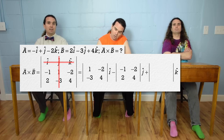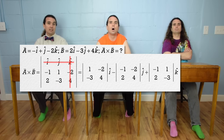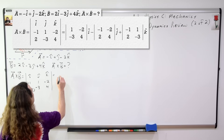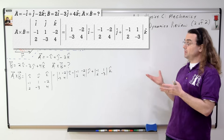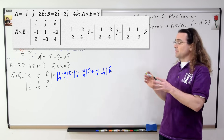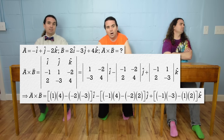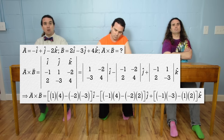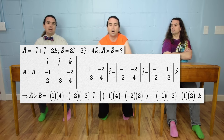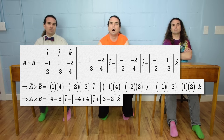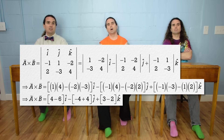Cross out the row and column which has k in it and add the determinant negative 1, 1, 2, negative 3 times unit vector k. Mr. P, can we skip this step? I don't normally write out the step with the 2 by 2 determinants, however I think it's a good idea this time to see where the next step comes from. Now we multiply 1 by 4 and subtract the product of negative 2 and negative 3, multiply that quantity by unit vector i. Then we subtract the quantity negative 1 times 4 minus the product of negative 2 and 2, all times unit vector j. And we add the product of negative 1 and negative 3 and subtract 1 times 2, all times unit vector k. That works out to be the quantity 4 minus 6 times i, minus the quantity negative 4 plus 4 times j, plus the quantity 3 minus 2 times k. And all that we're left with is negative 2i plus k.